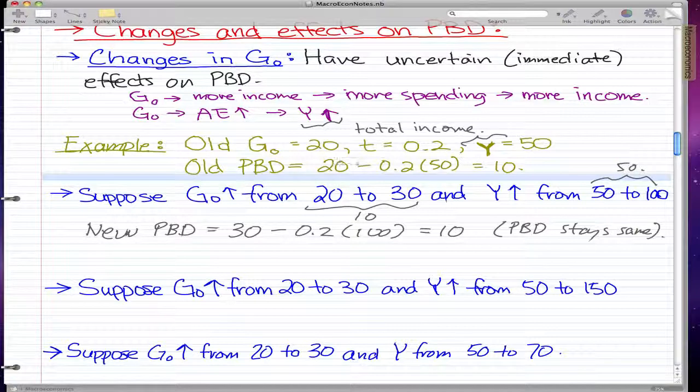Because the old PBD is 10 and the new PBD is 10, that means that the government spent as much as they did last year when they calculated the old PBD.